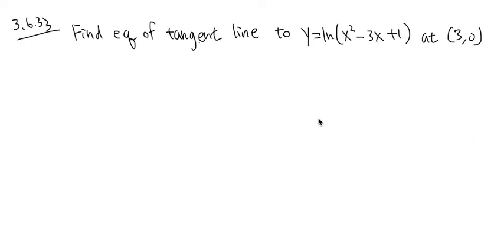3.6 number 33, we are going to find an equation of a tangent line to the curve at this point. As usual, we need two things. First, it's the slope, and the slope of the tangent line is just the derivative.